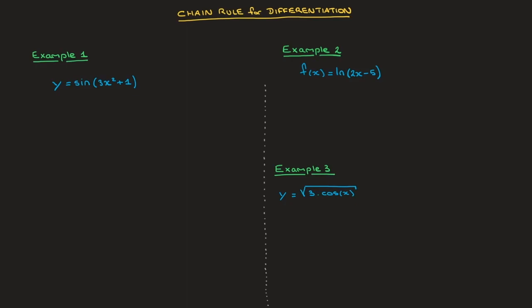The chain rule states that if y is equal to some function f of another function, which I'll call u of x, then its derivative dy/dx is equal to the derivative of y with respect to u — that's dy/du — times the derivative of u with respect to x — that's du/dx. This is known as the chain rule for differentiation.